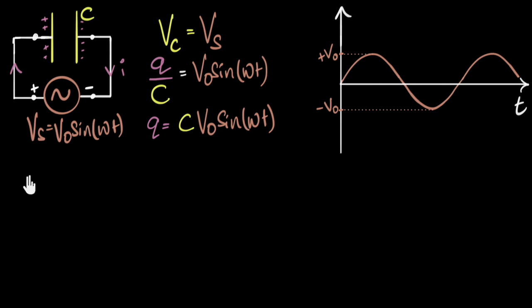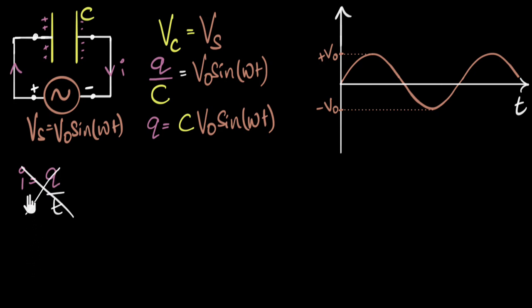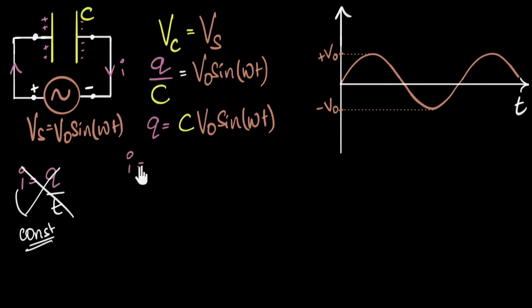Can I just say current equals charge divided by time? Pause the video and think — is this right or wrong? The answer is I can't say this. This would only work if the current was a constant — if the amount of charge flowing per second is a constant, only then can I say it's charge divided by time. But in our case, the current won't be a constant; it's continuously going to change its value and direction. So for this, we have to differentiate. The current is going to be dQ/dt — you consider a very tiny amount of charge flowing through a very tiny amount of time, and that gives the current at that moment.